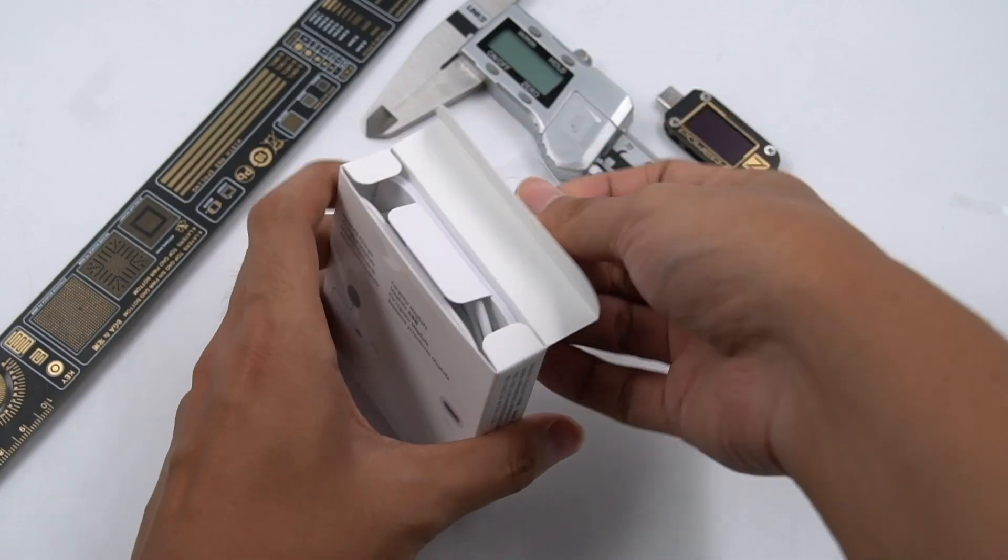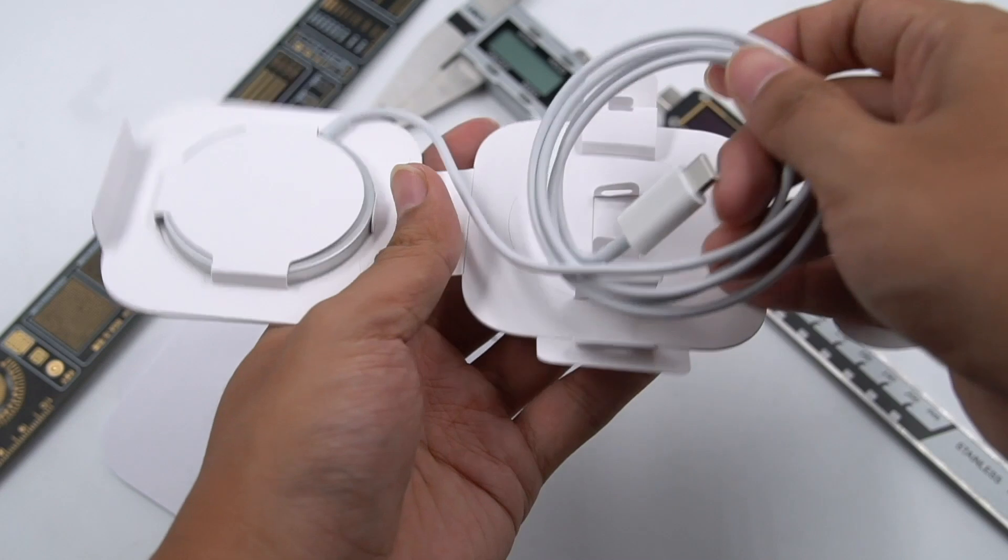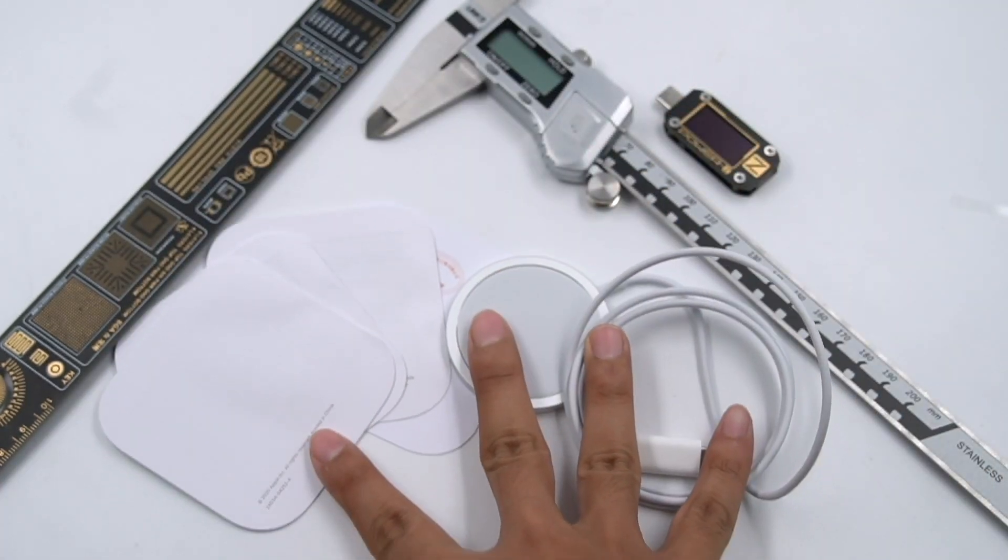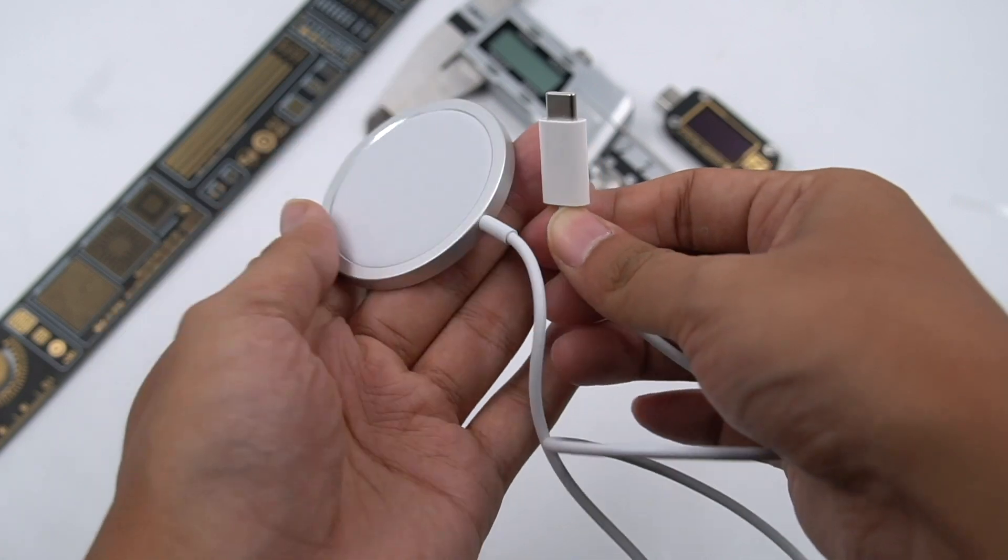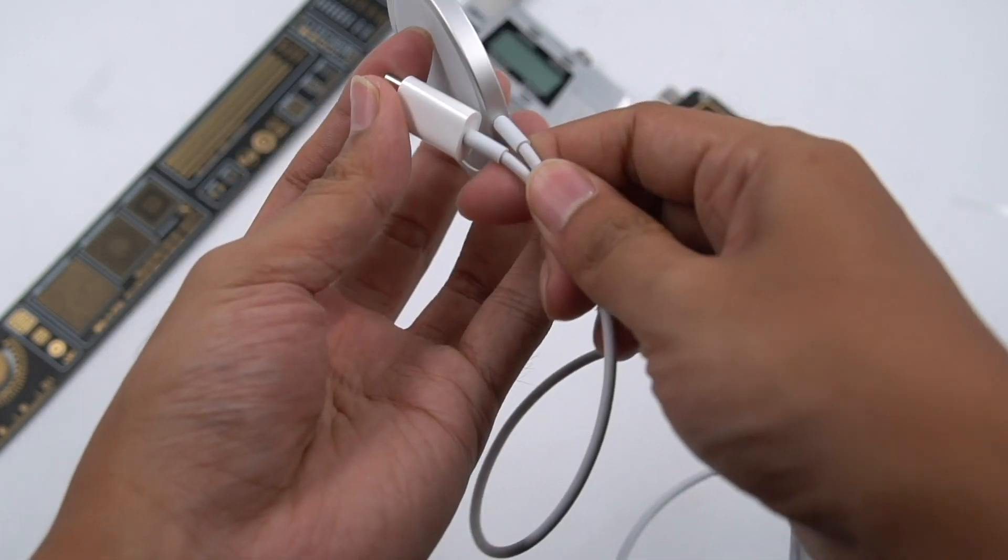Open the box. Only MagSafe charger and some documents. It comes with USB-C cable, and the junction of the cable and the charging pad has been protected.